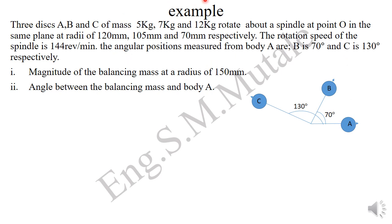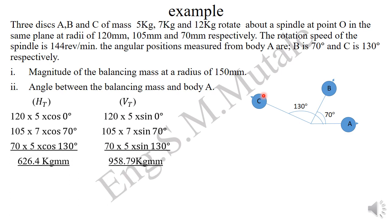This is the pictorial view of the setup. We are asked to calculate the magnitude of the balancing mass at a radius of 150 mm, and the angle between the balancing mass and body A. Following the procedure from the previous slide, the total horizontal component starts with mass A: radius 120 mm × 5 kg × cos(0°), since A is the reference at 0 degrees.